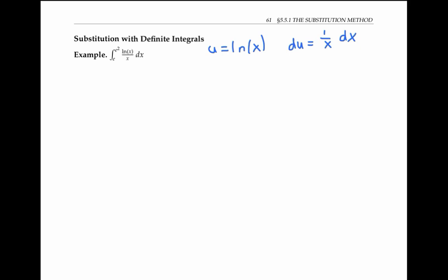Our bounds of integration, e and e² are values of x. As we convert everything in our integral from x to u, we need to convert the bounds of integration from values of x to values of u also. Now, when x is equal to e, u is equal to ln(e), which is one, just using this equation.